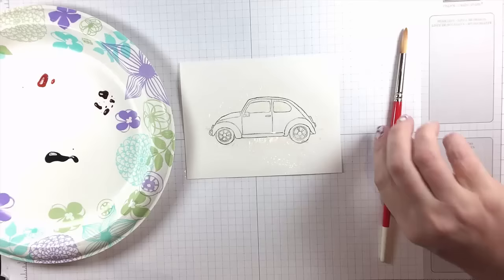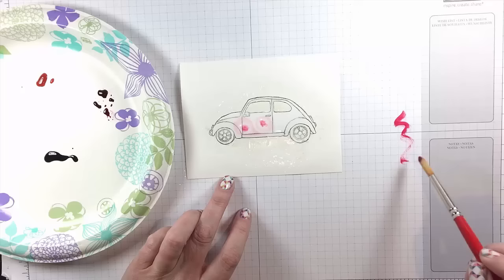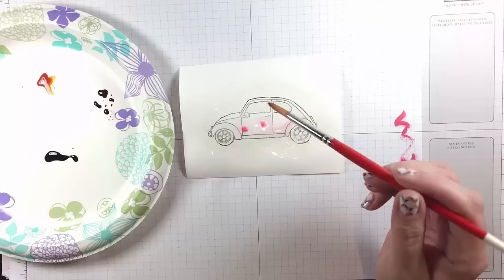I sprayed the cardstock with water and I am using three colors of reinkers: Melon Mambo, Daffodil Delight, and Tempting Turquoise.